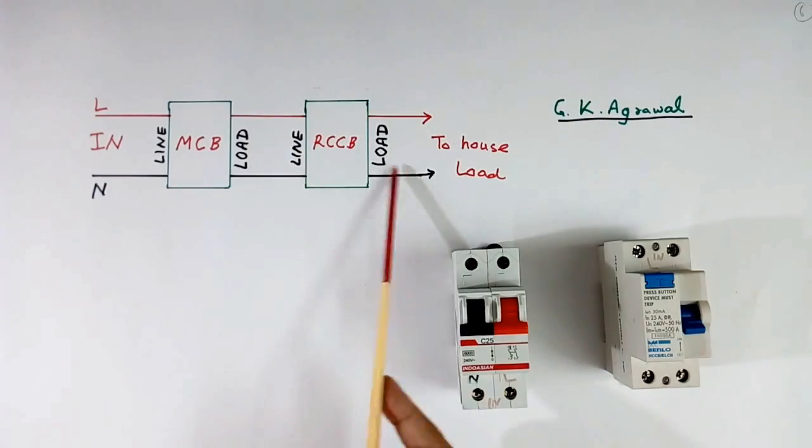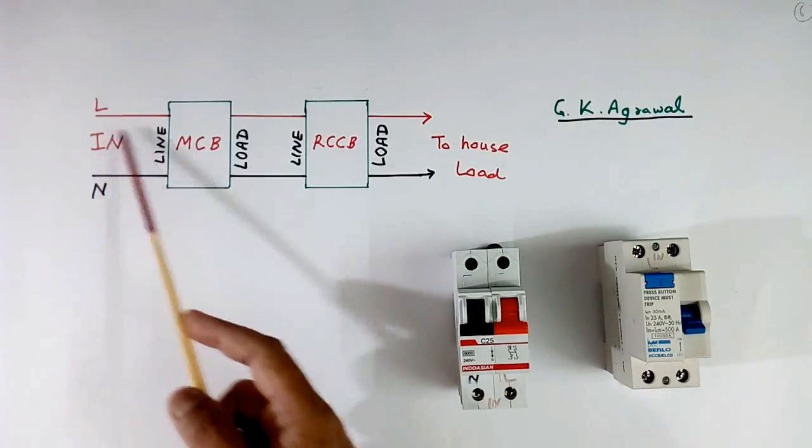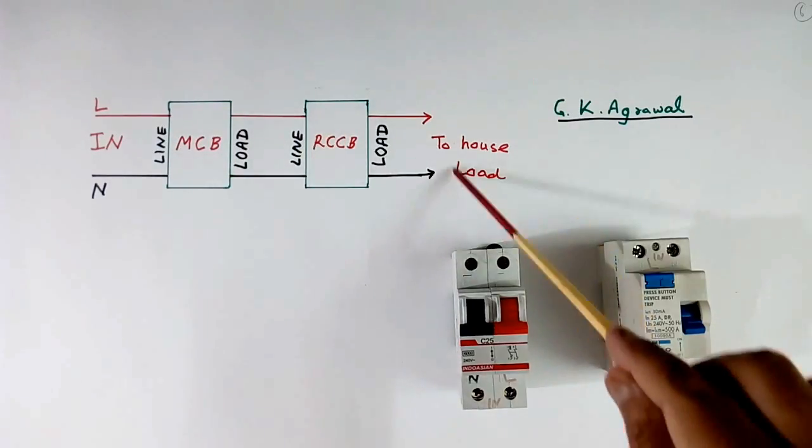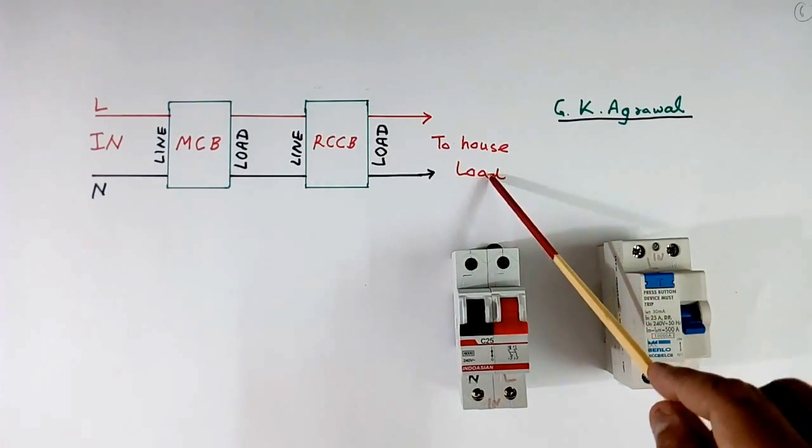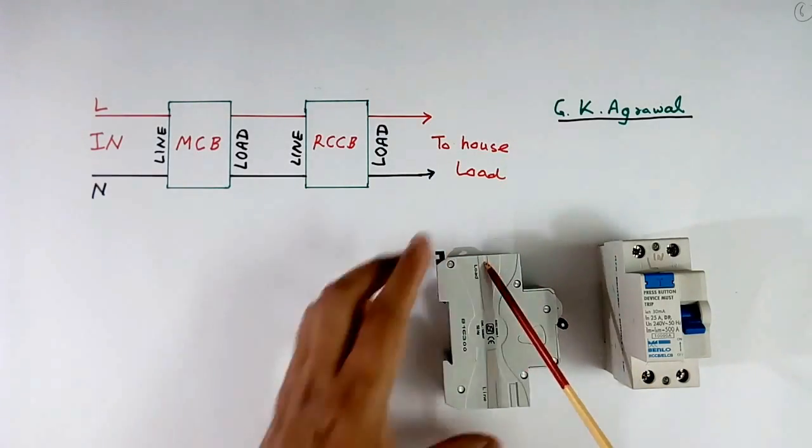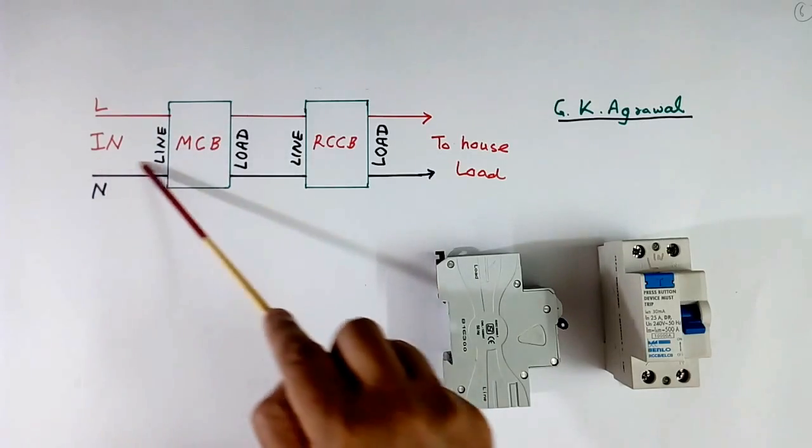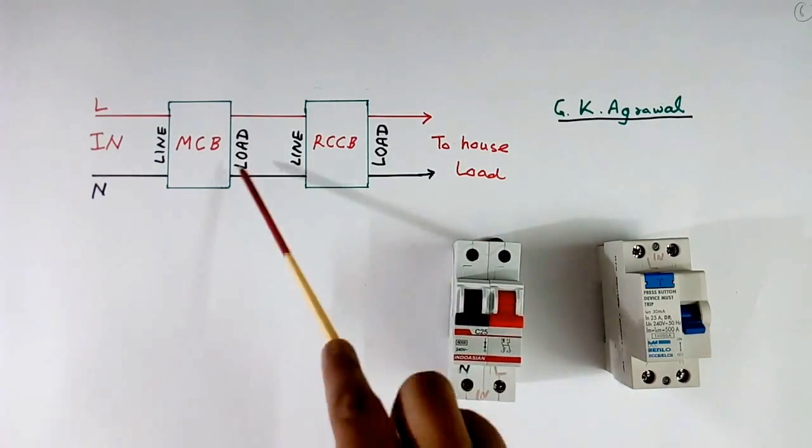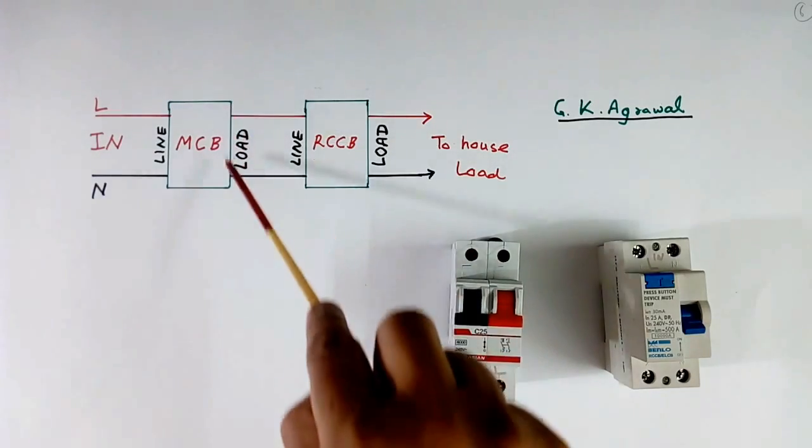This is connection arrangement. This is input. This is MCB. This is RCCB. This is to house load. Now here, this is MCB. This is written line. This is written load. So this wire, incomer will be connected to line. Means here. And output is this. This is load.